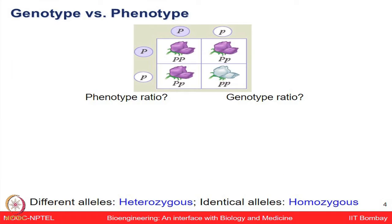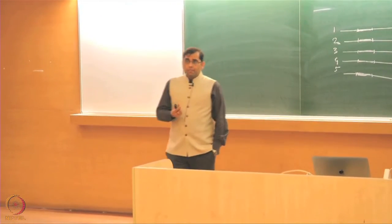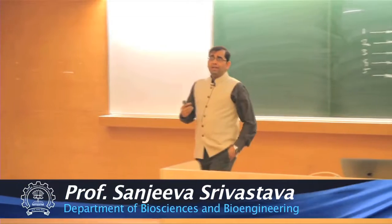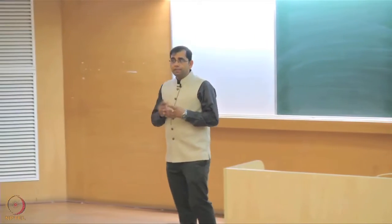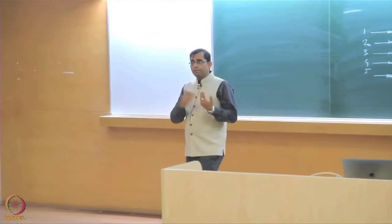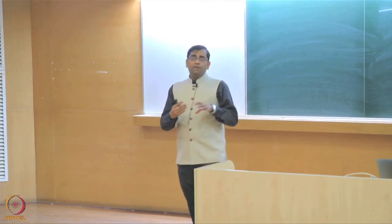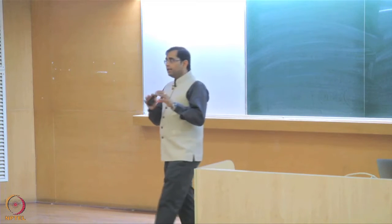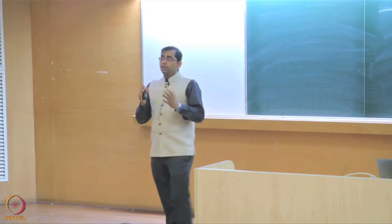Now let's discuss this in the context of Mendel's experiment. Gregor Mendel was a scientist who did genetics experiments on the garden pea plant. While observing pea plants, he found many contrasting characteristics and thought those were characters that transmit from one to the next generation — what we now call heritable factors, or genes. One gene might have different allelic forms.